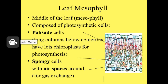The palisade cells are arranged in a compact columnar fashion. Most of the photosynthetic activity takes place in the palisade layer because it is closer to the sun, and its cells have more chloroplasts than the layer below, which is called the spongy mesophyll. Mesophyll means the middle of the leaf, and the spongy area has cells which do both gas exchange and photosynthesis.